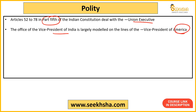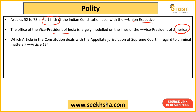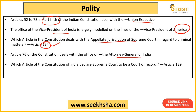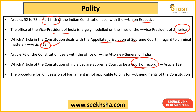The Vice President of India's office is based on the American Vice President model. The article dealing with the Appellate Court's appellate jurisdiction is Article 134 — keep this important article in mind. Article 76 deals with the Attorney General of India. Article 129 declares the Supreme Court as the Court of Record — this is also an important article.